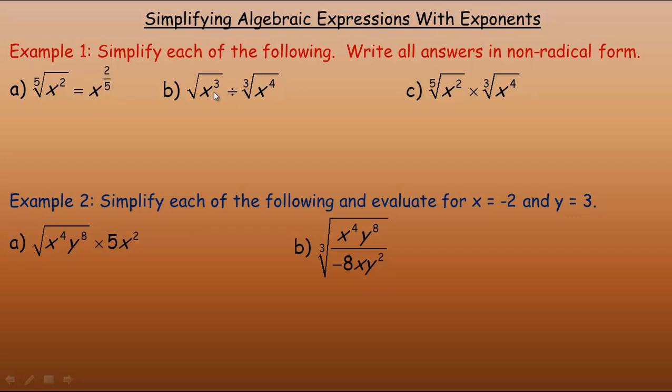In B, to divide these two radical expressions, I would first convert them to powers the same as I did here. So now when you don't see a root, it's automatically the square root. So this would be x to the power of 3 over 2. And this one would be x to the power of 4 over 3. The root is 3, so there would be a 3 here.